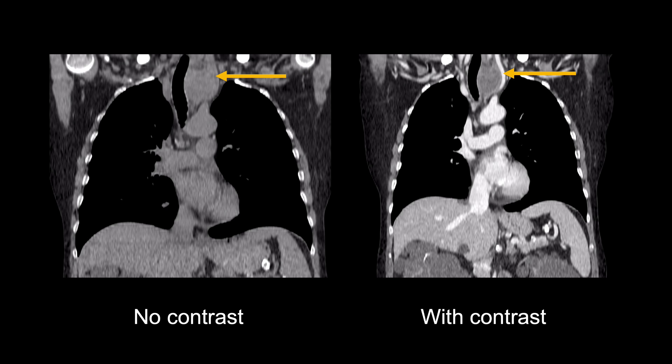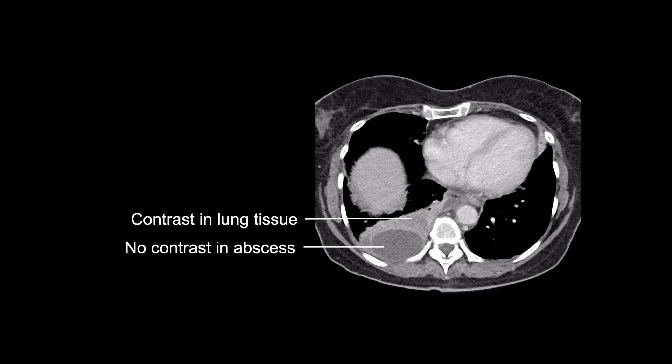Another example is when a hilar blood vessel is perfused more than a hilar lymph node and can easily be seen with contrast. A difference in enhancement may also be due to the absence of blood flow in one of the structures, such as in pleural fluid or a pulmonary abscess, as seen in this example.